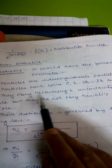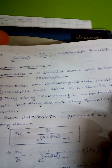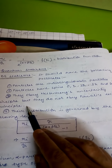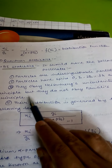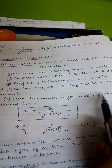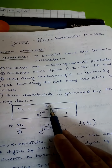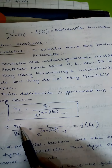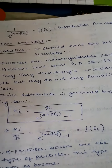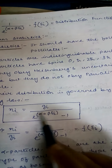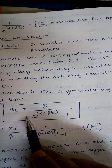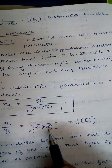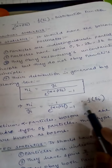Third postulate: they obey the Heisenberg uncertainty principle but do not obey Pauli's exclusion principle. Fourth, their distribution is governed by: n_i equals g_i divided by (e to the power alpha plus beta times e_i minus 1). The distribution function is therefore f(e_i) equals 1 over (e to the power alpha plus beta e_i minus 1).